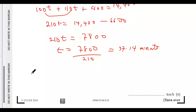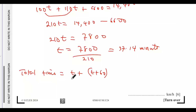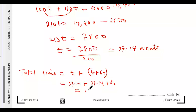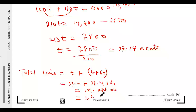The total time taken is t + (t + 60) = 37.14 + 37.14 + 60 = 134.286 minutes, which converts to 2.238 hours. Now we can calculate the average speed: 240 ÷ 2.238 ≈ 107 kilometers per hour.